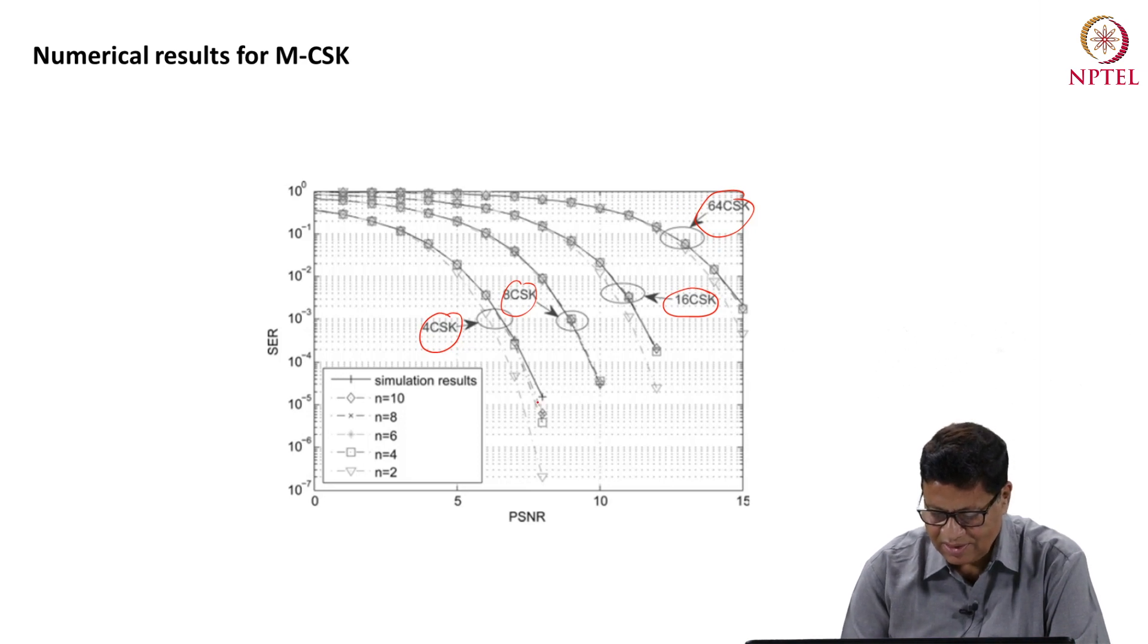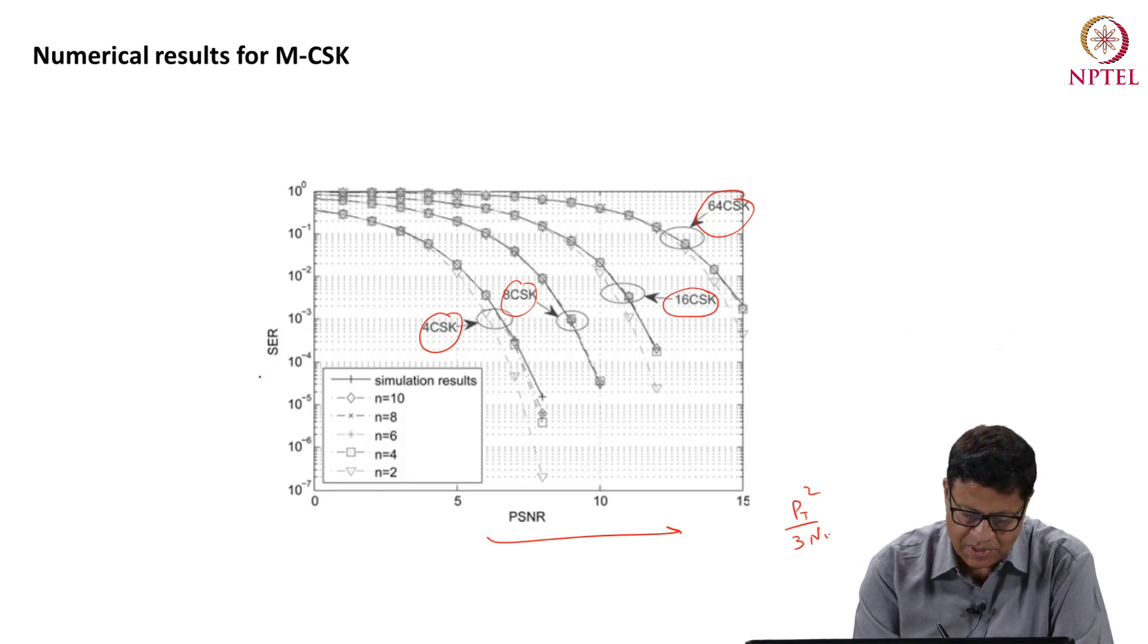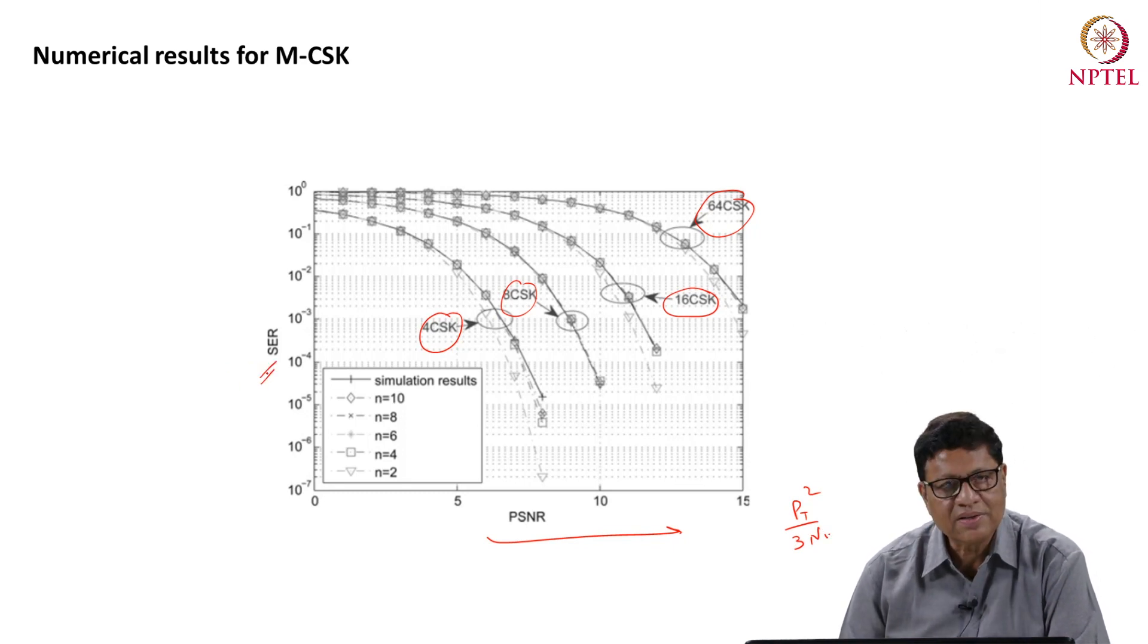The dash lines are analytical results and the solid lines are simulation results. In this side you have the P SNR which is given as P T square over 3N naught and this side you have the symbol error rate for different constellation diagrams.